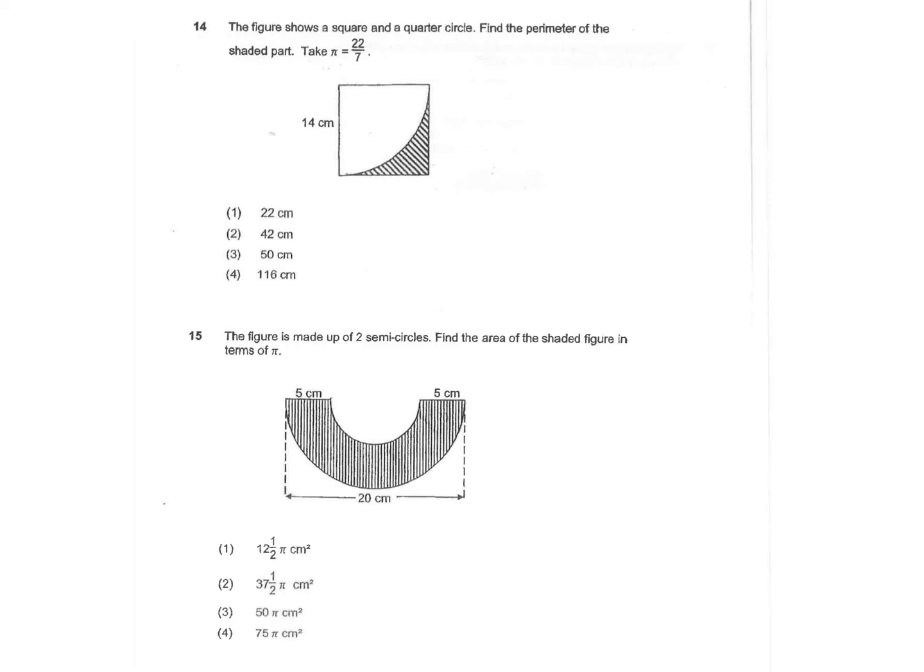Question 14. The figure shows a square and a quarter circle. Find the perimeter of the shaded part, take pi equals to 22 over 7.